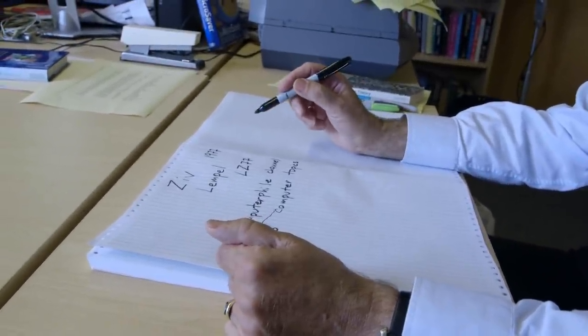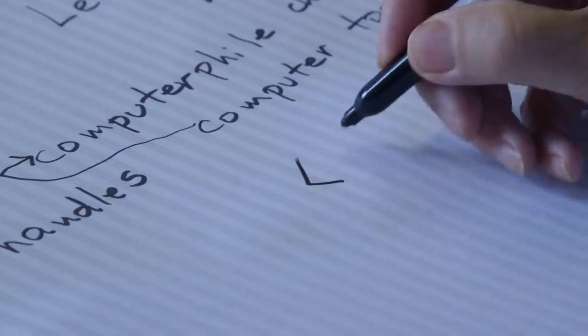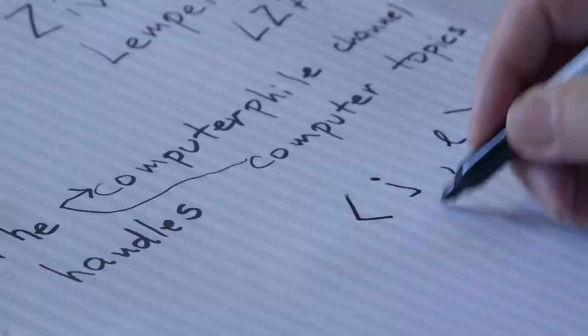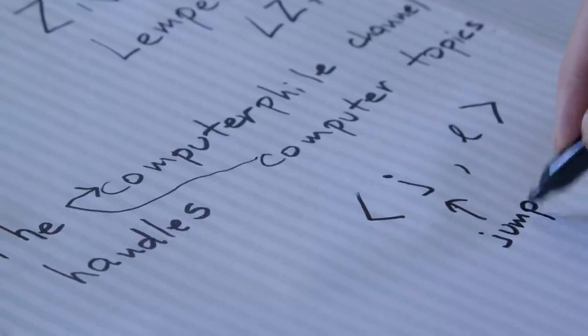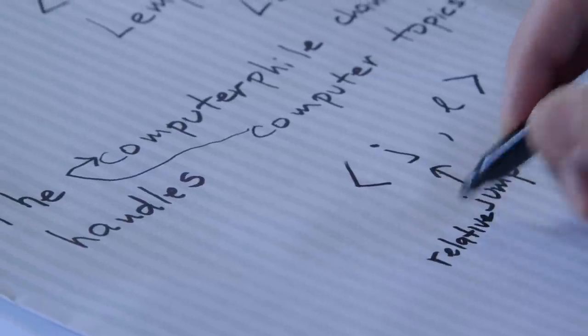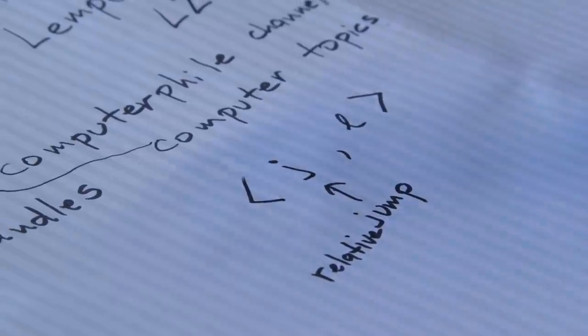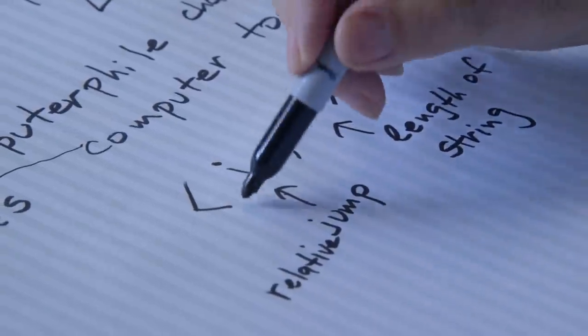And what the Lempel-Ziv method does is it uses a pointer and in that composite pointer it points back to where the phrase first occurred and it also notes down how long the phrase was at that point. Now I'm going to denote these pointers with a notation that looks like this. I'll call it J and L. J being the jump. It's a relative jump. How many characters back would I need to go to encounter this word computer somewhere else? And when I do get back to that character position in the file, then how long will the string of characters be? Now I must emphasize, if you look inside a Lempel-Ziv file, you will not see pointy brackets, let alone numbers or characters here. This is just my notation to try and illustrate what is going on.